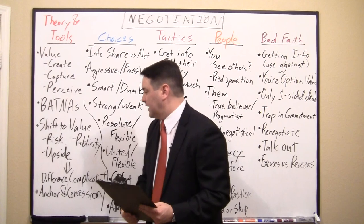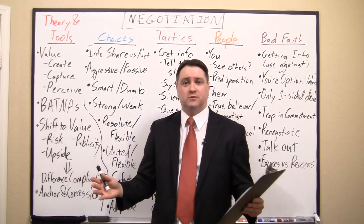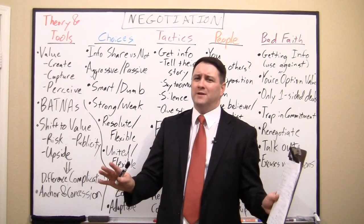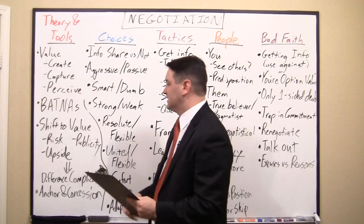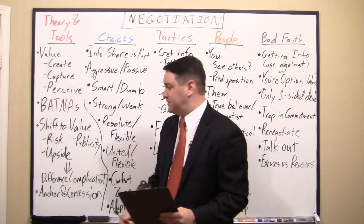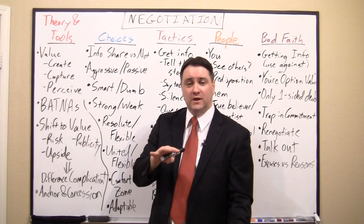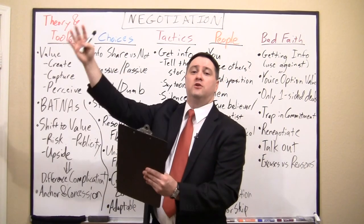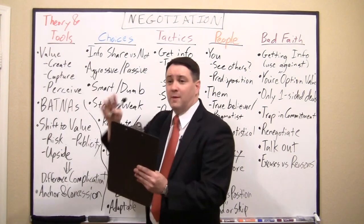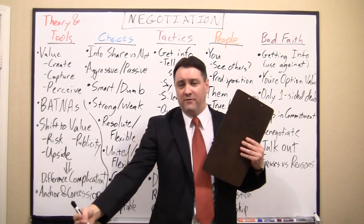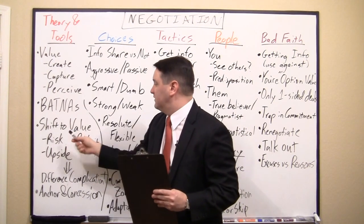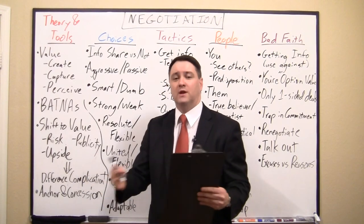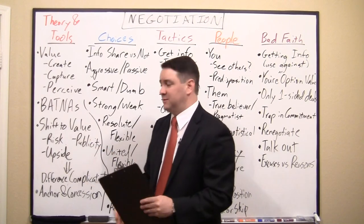Sometimes one party thinks a deal is a sure thing and will be a huge success, while the other is more skeptical. The skeptic takes a larger share of the initial benefit, and the optimist takes a larger share of anything above that threshold. They've effectively shifted value to the party who values it most — the skeptic gets more of the initial, the optimist gets more of the upside.